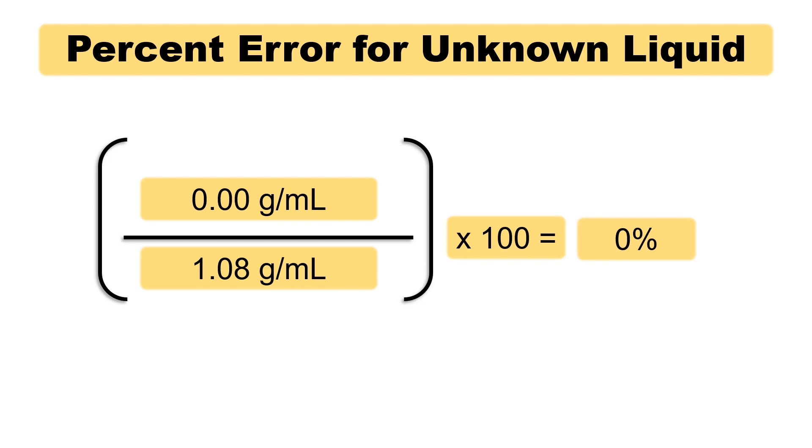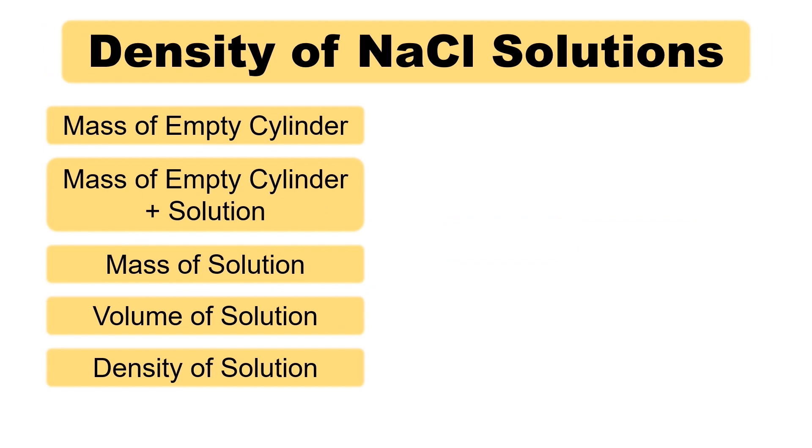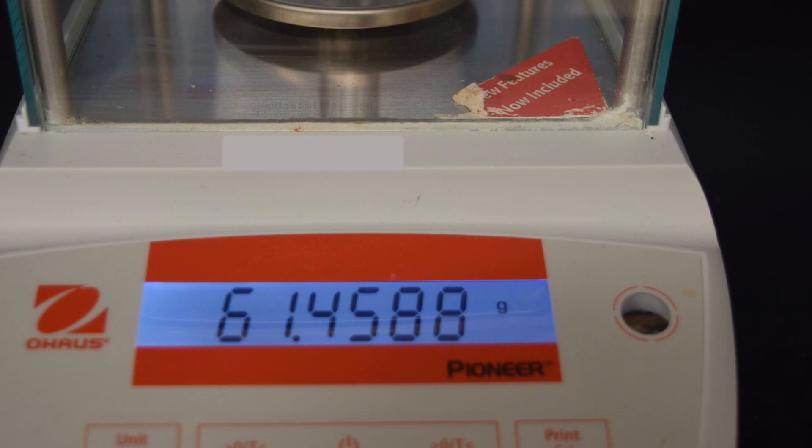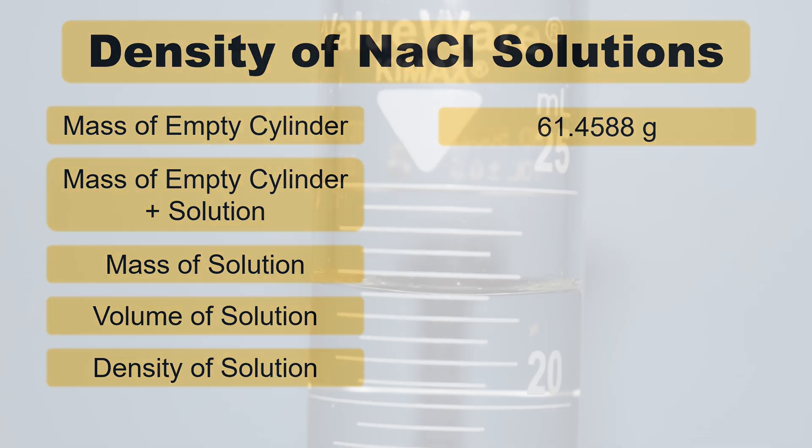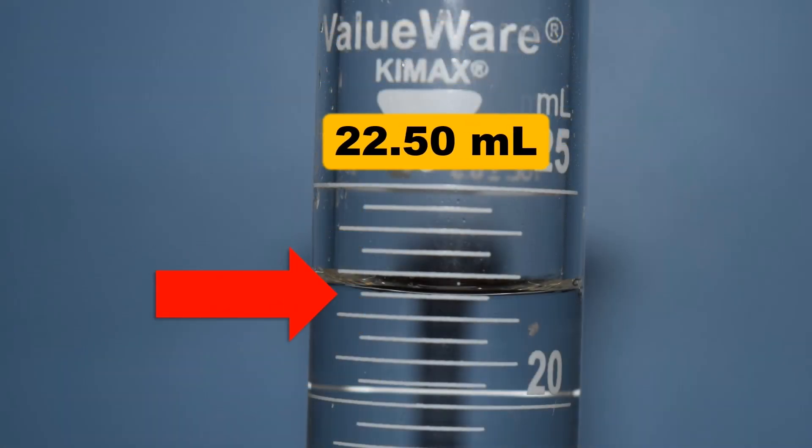Now, let's do one example to find the densities of solutions. Again, we'll use the same procedures as finding the densities of liquids. We'll use prepared 5, 10, 15, 20, and 25% sodium chloride by mass concentrations. For this video, I'll only show the 20% density determination.